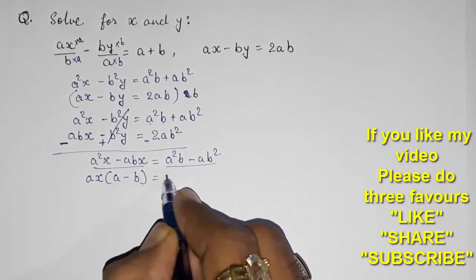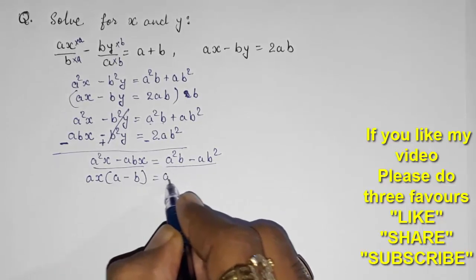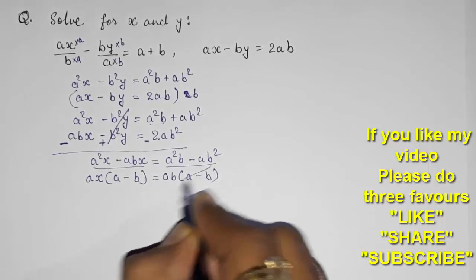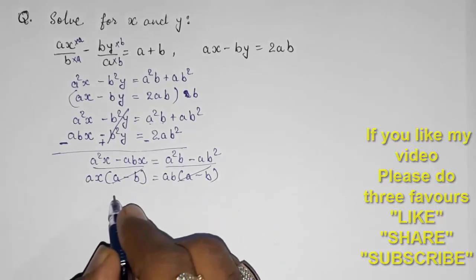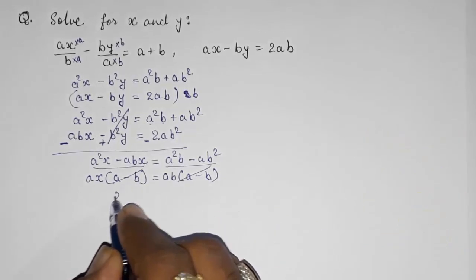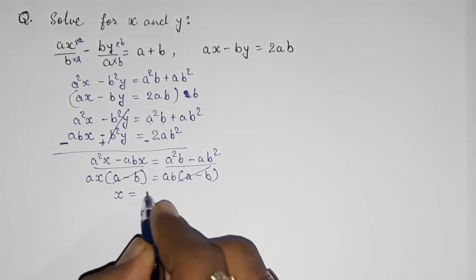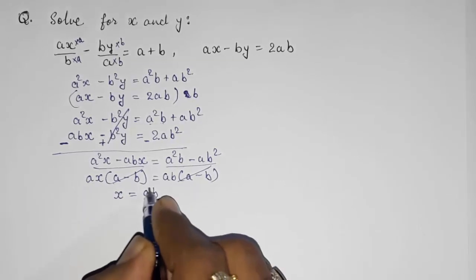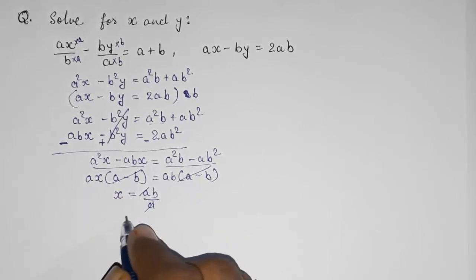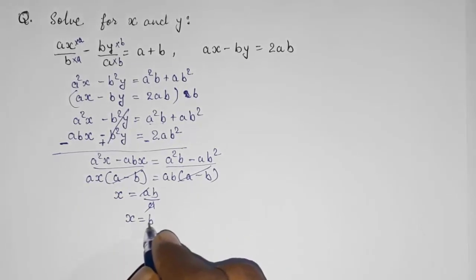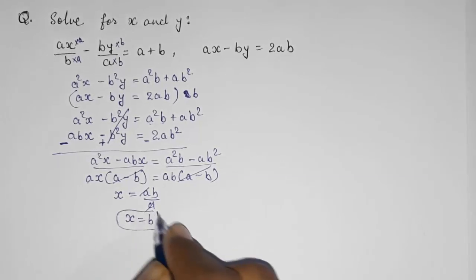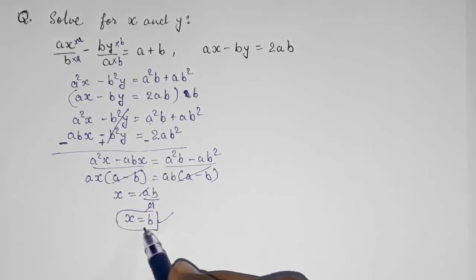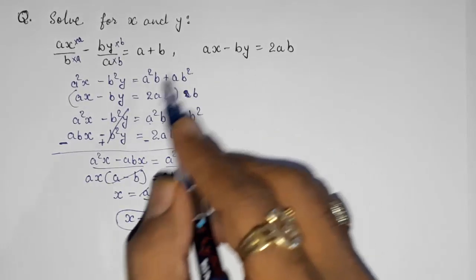The (a minus b) factors cancel on both sides. We need x, so taking a from the denominator, the a also cancels, giving x equals b. We have found x equals b.